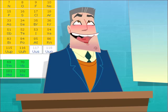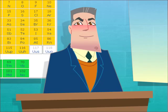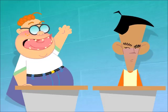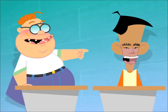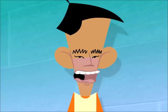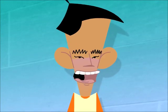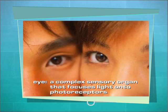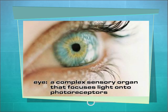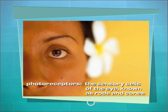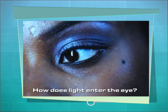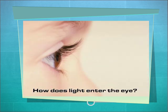Mr. Einstein? I've been reading about how the eye is a complex sensory organ that focuses light onto photoreceptors, the sensory cells of the eye, known as rods and cones. But how does light actually enter the eye so I can see objects?